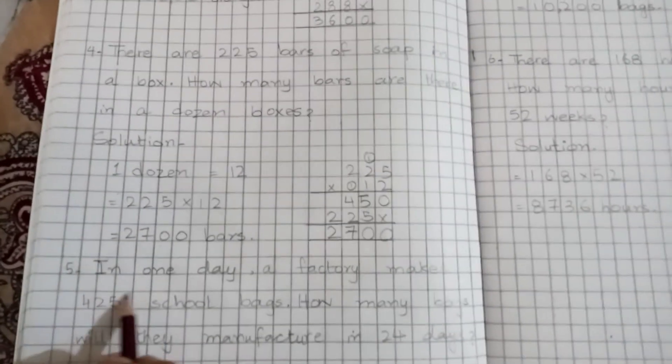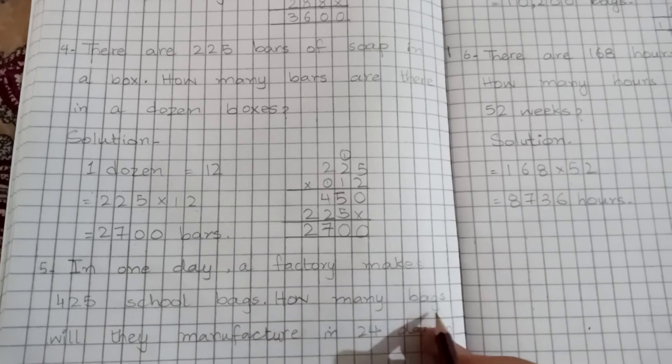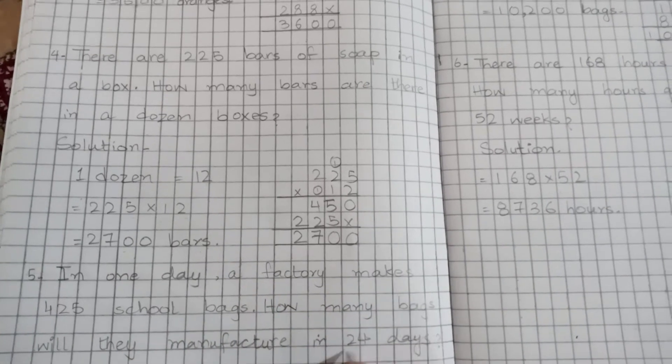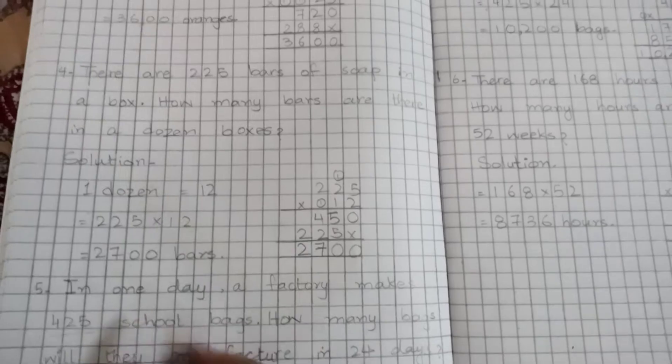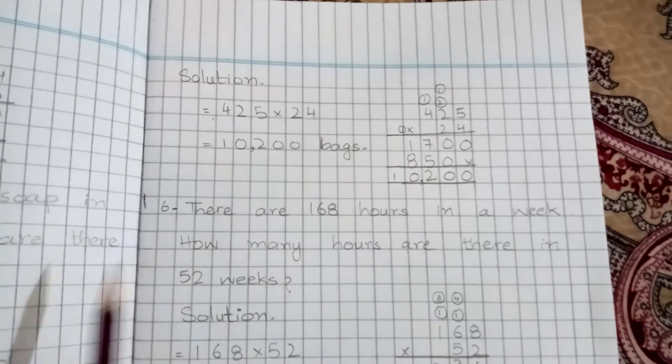Part number 5: In one day a factory makes 425 school bags. How many bags will they manufacture in 24 days? 425 times 24, so you will have total bags. Multiply here: 10,200 bags total.